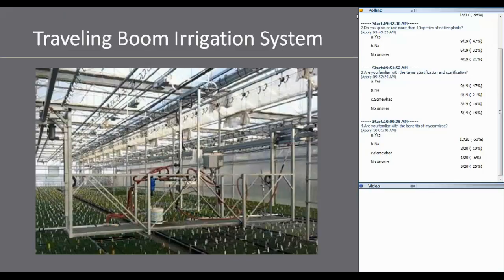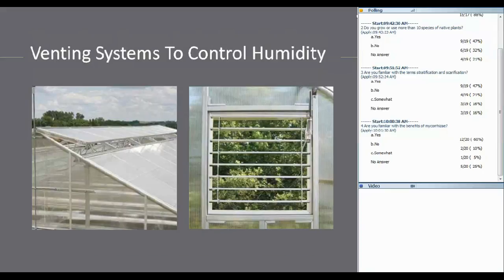A traveling boom irrigation system is really good because you can set it to put out a certain amount of water on certain trays and less on others. You can also inject fertilizer dependent on species. High humidity can be controlled by having good venting systems and fans, either automatic or manual.